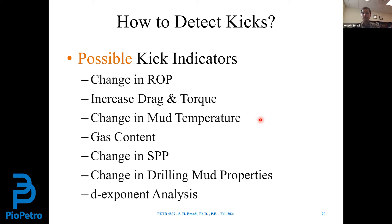Change in drilling mud properties — like chloride content or other properties — because mud properties change if any contamination happens. The DC exponent analysis, which is related to ROP: as we drill deeper and deeper, we expect the exponent to increase, and any decrease or deviation from the normal trend tells us about a possible kick or abnormal pressure.